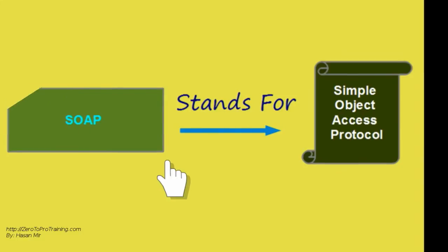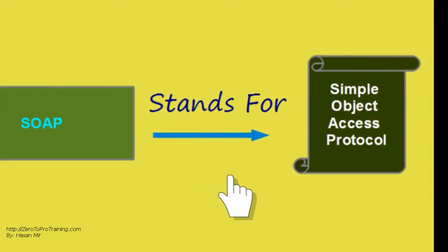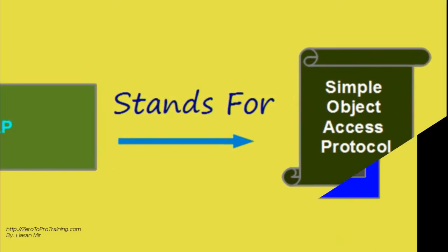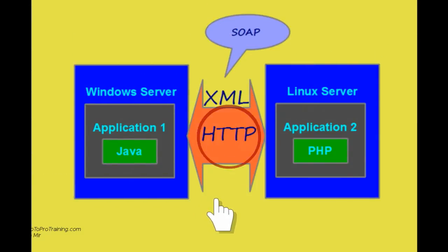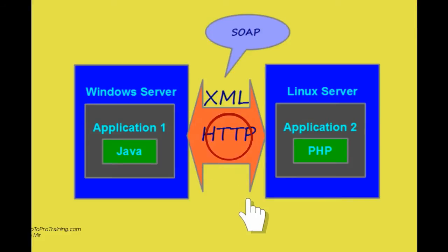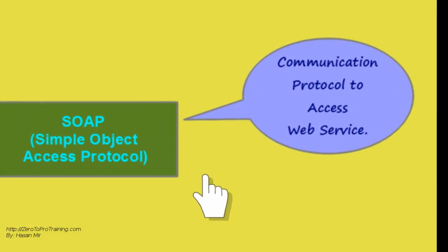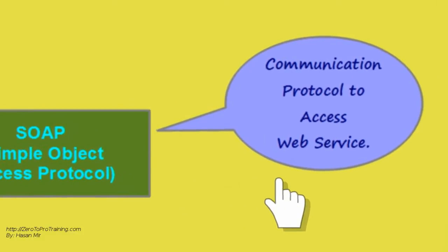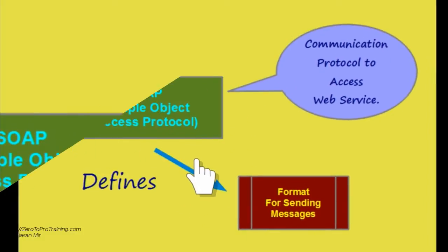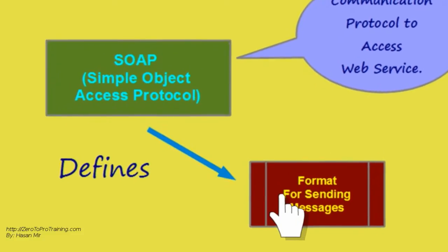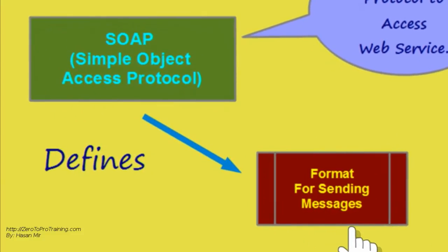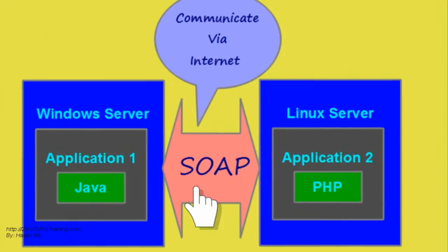SOAP stands for Simple Object Access Protocol. SOAP is an XML-based protocol — it lets applications exchange information over HTTP. Since it is based on XML, it is simple and extensible. In short, SOAP is a communication protocol for accessing a web service. It defines the format for sending messages. It is designed to communicate via internet.